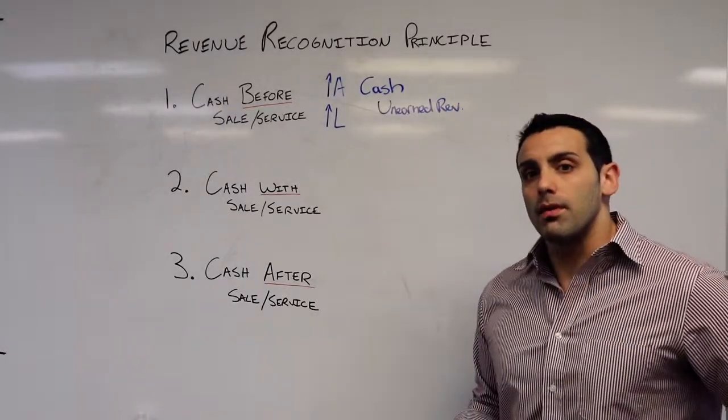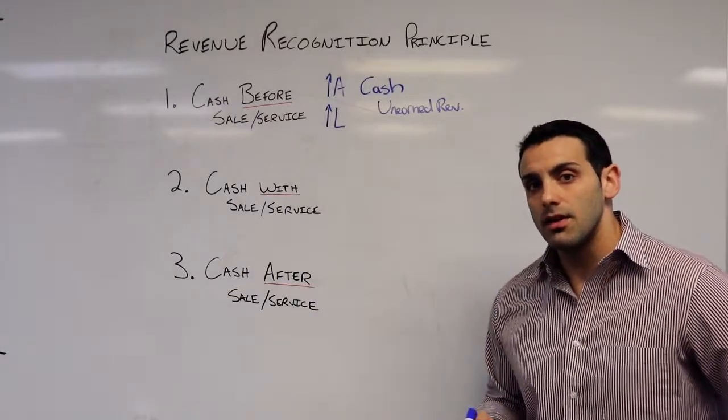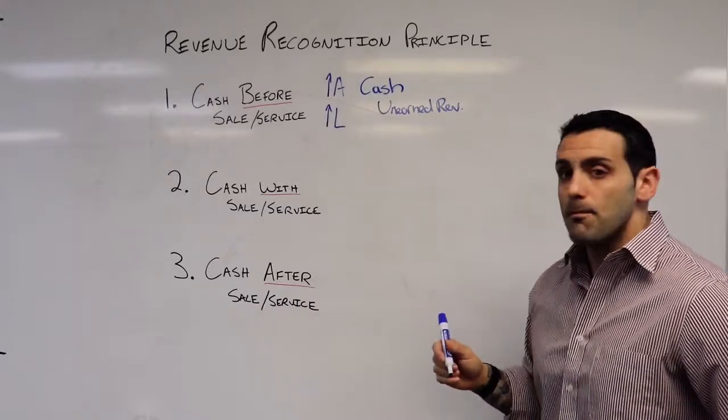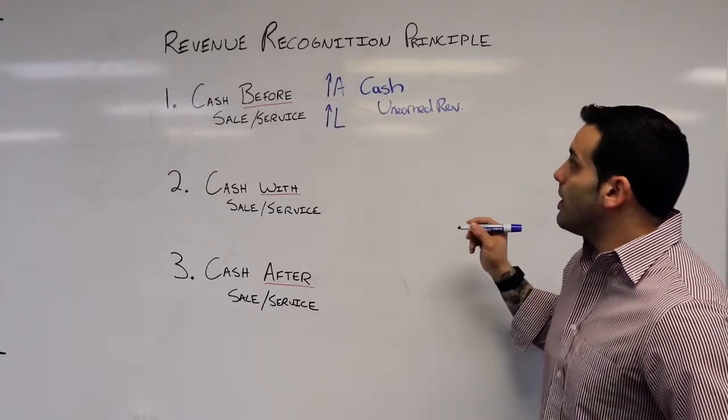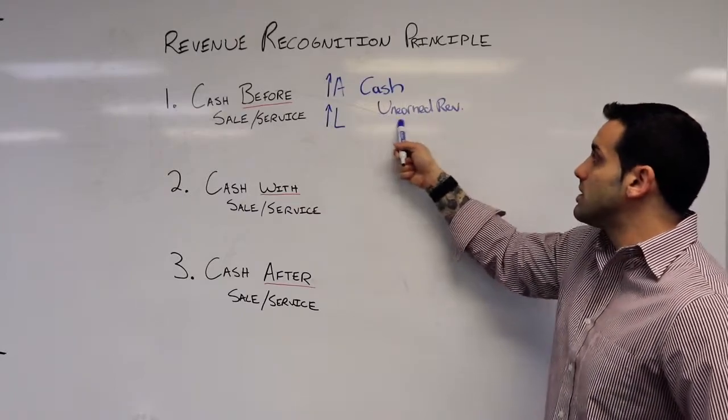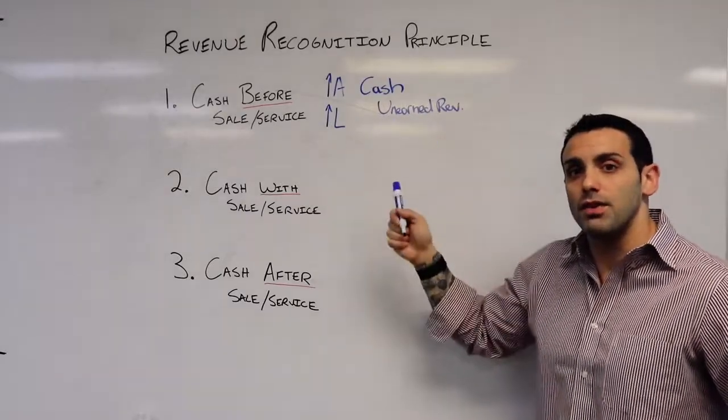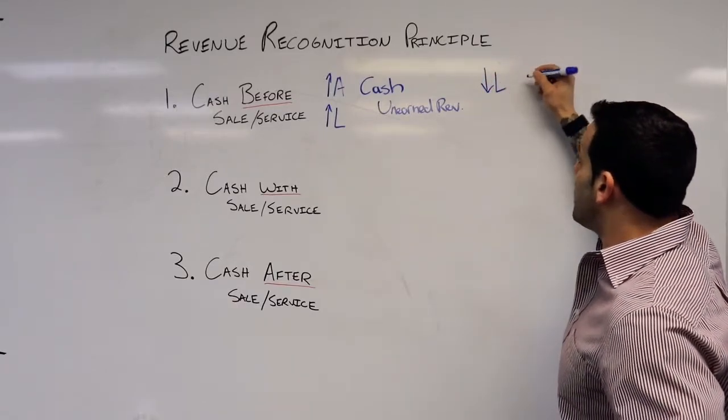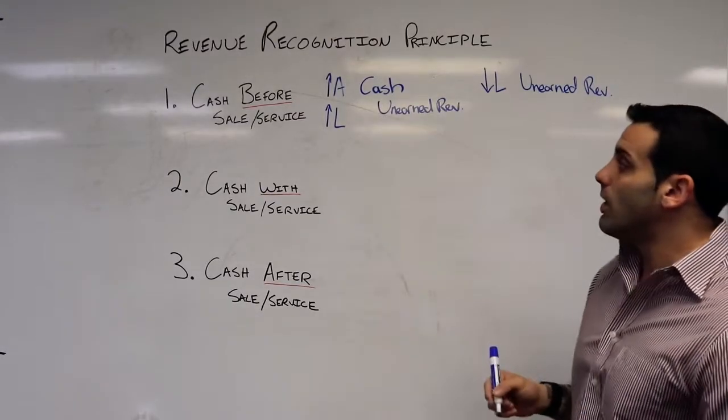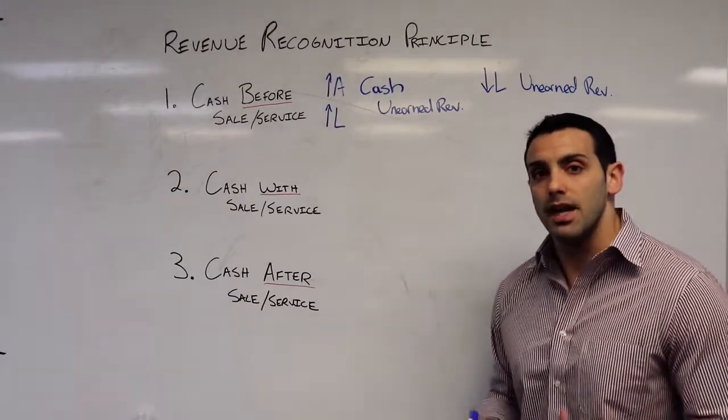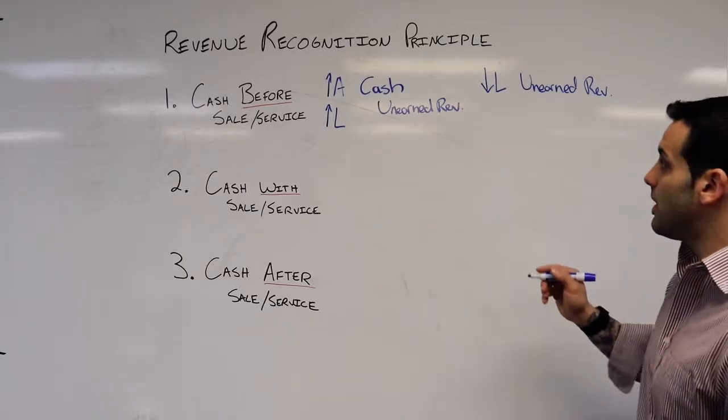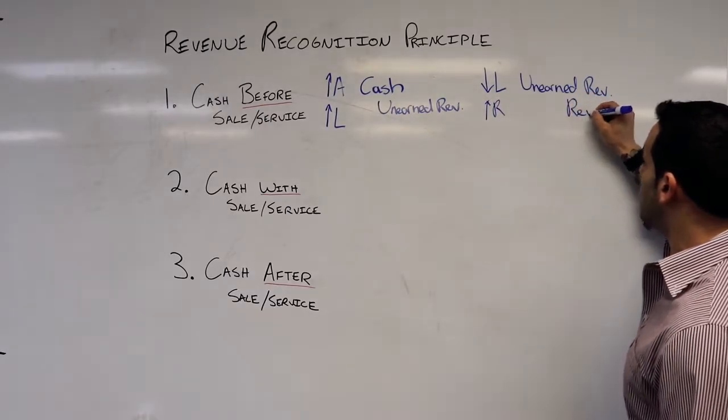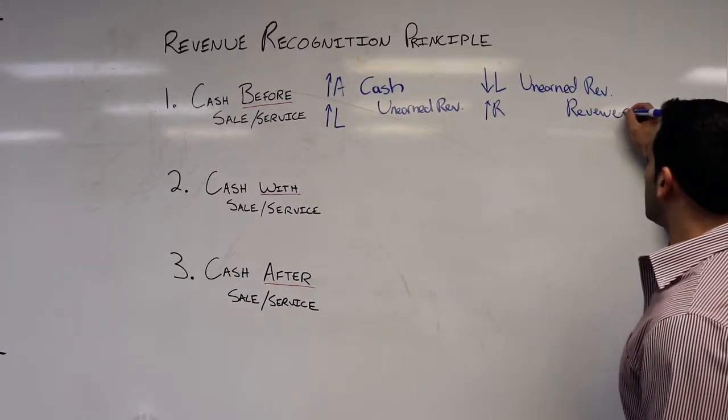Now, when we perform the sale or service in this case, we've already received the cash, so we're going to leave that alone. However, we are going to decrease or offset this unearned revenue. We're going to kill the unearned revenue, kill that liability with a debit. And now, since we completed the sale or service, we can finally recognize that revenue. And we're going to credit sales revenue.